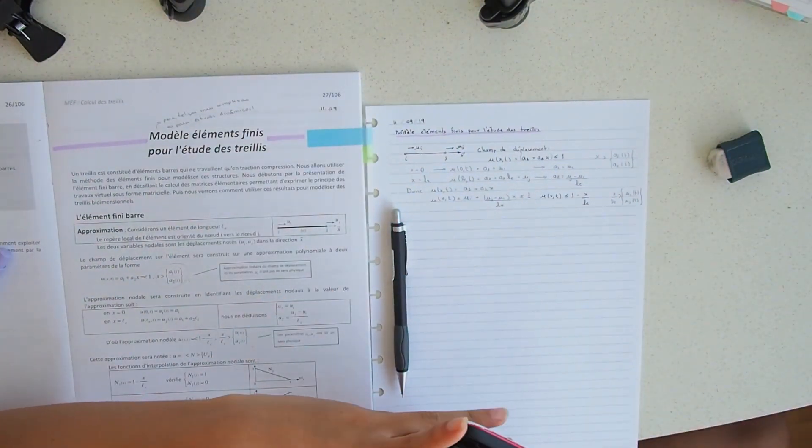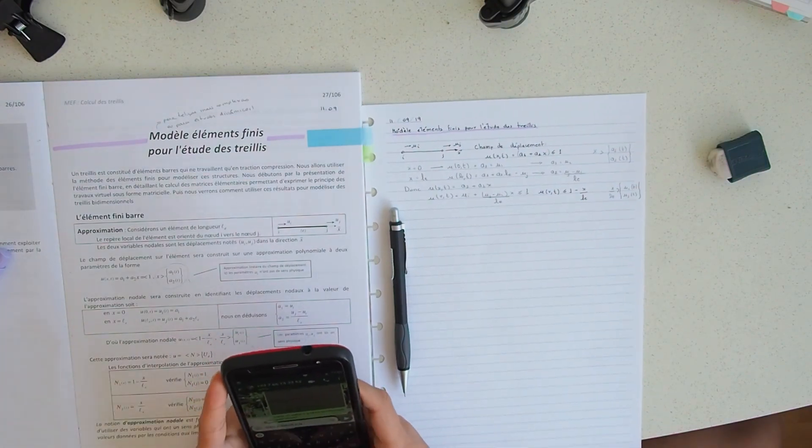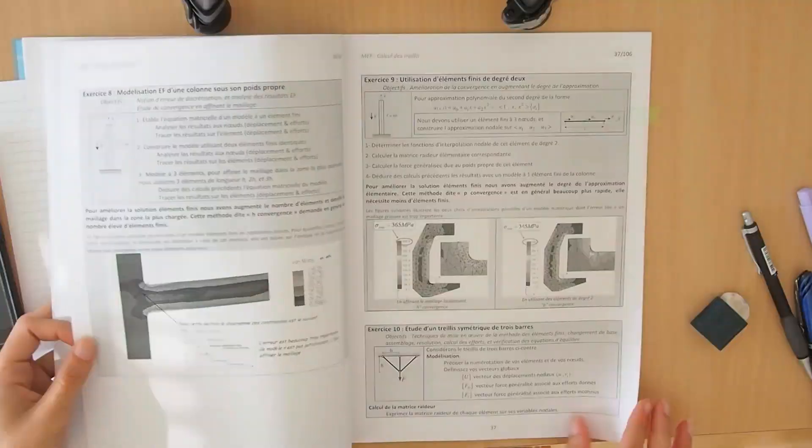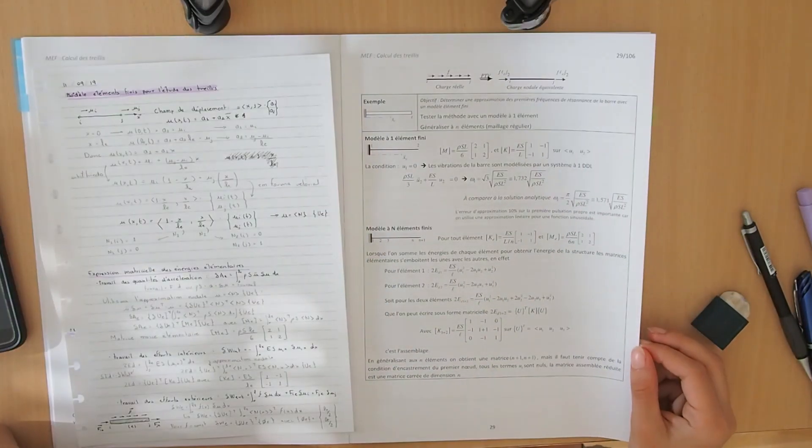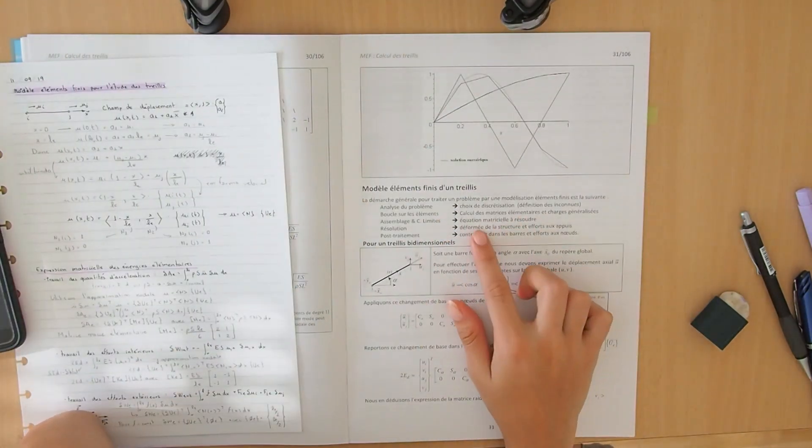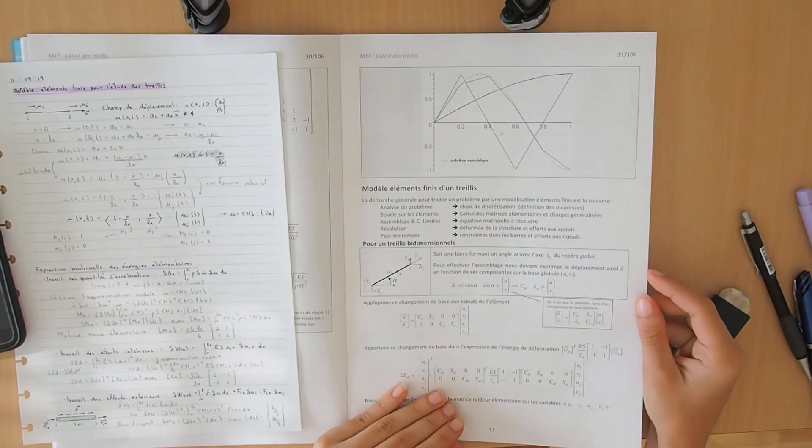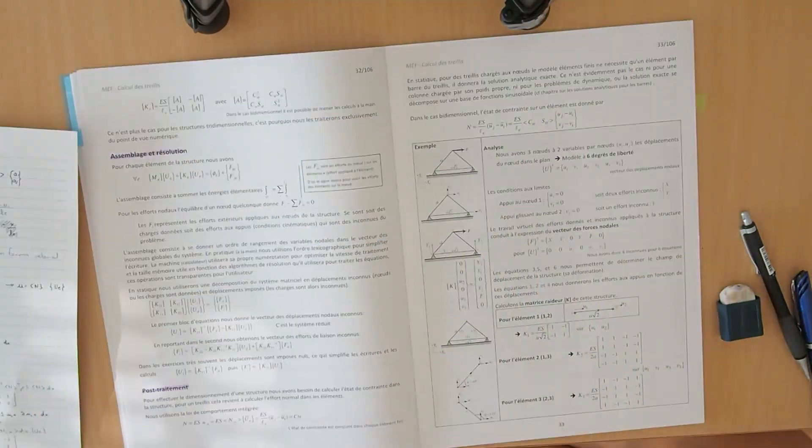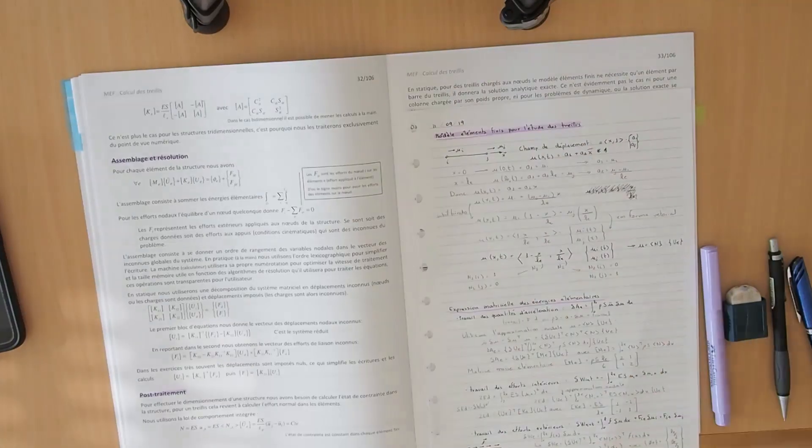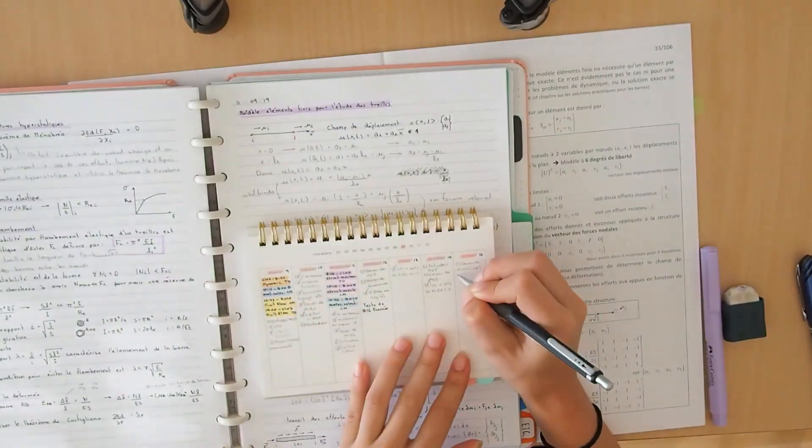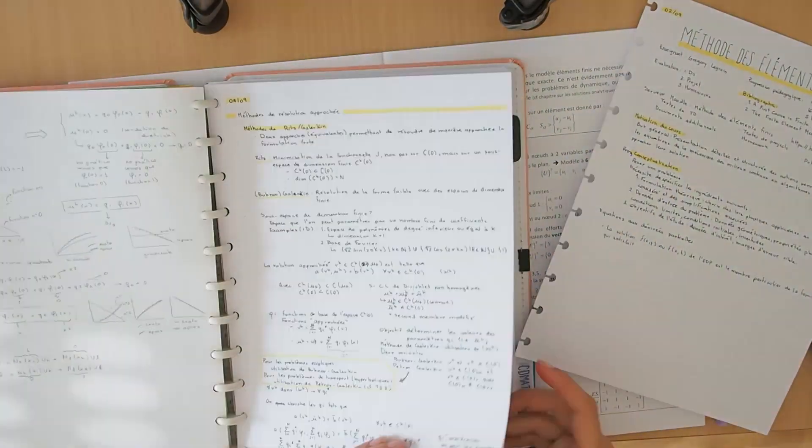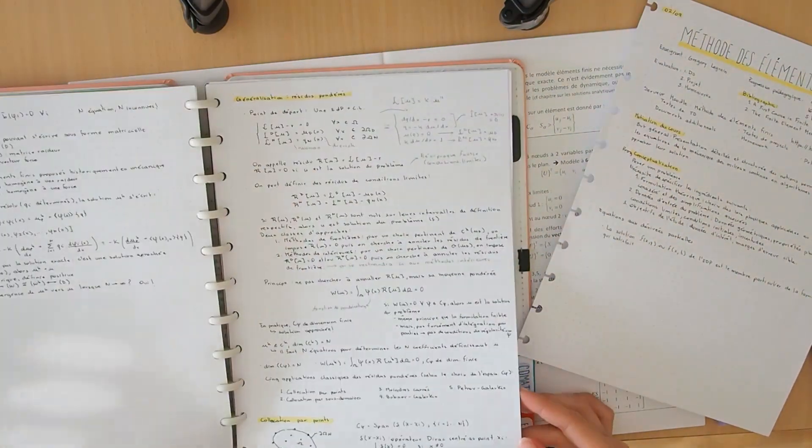One thing I decided to do to solve this problem was to download an app called Forest. In this app you basically plant a little tree and you cannot use your phone while the tree is growing, otherwise you'll kill the tree. So you can put a timer for, example, half an hour, 40 minutes, even 10 minutes, and during this time the tree will be growing. If you use your phone for anything the tree will die, and you don't want your tree to die because you want to build a very pretty forest and stuff like that.